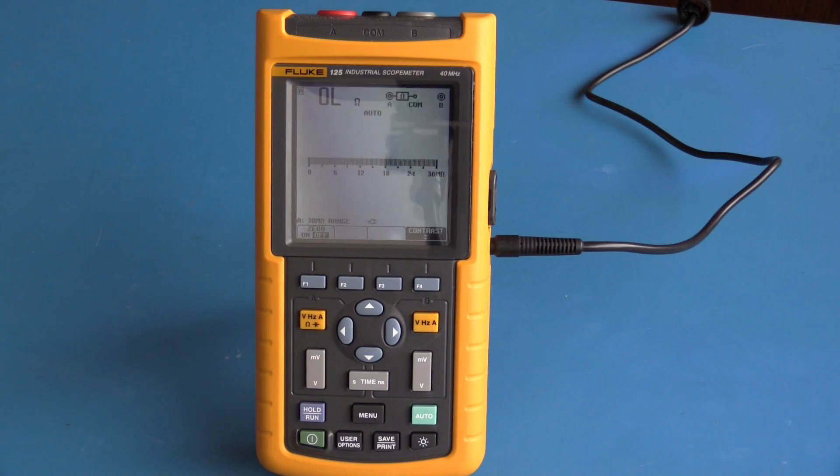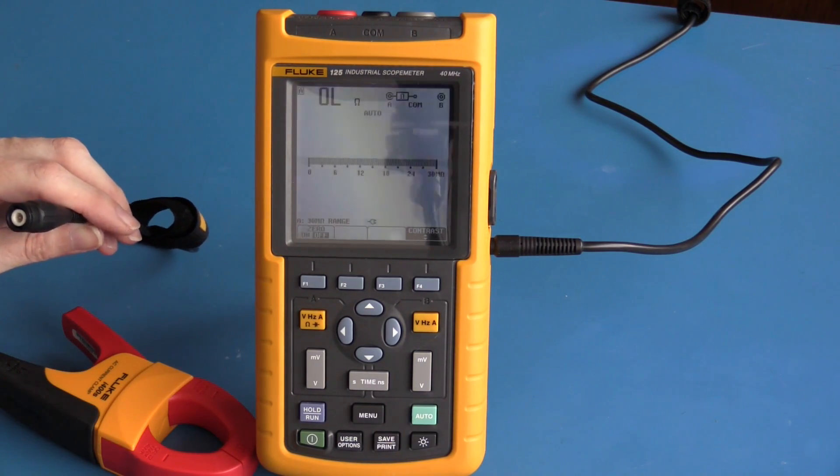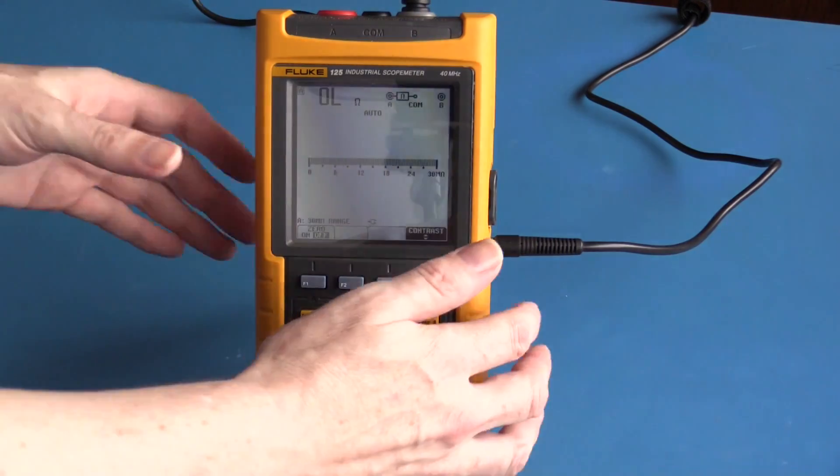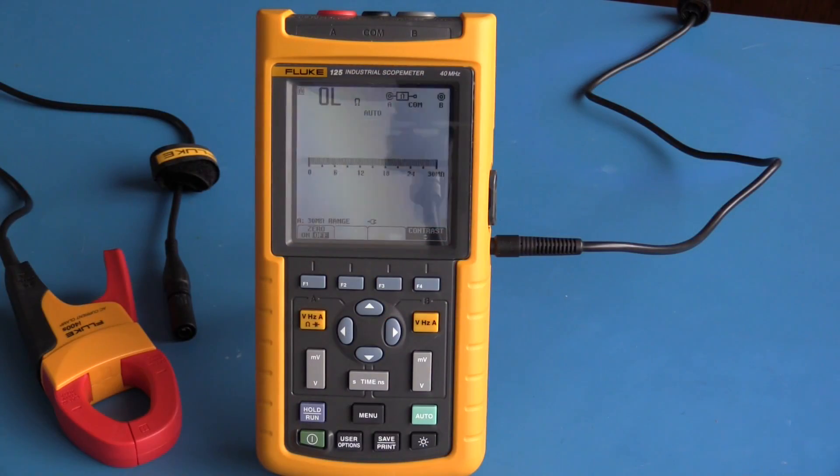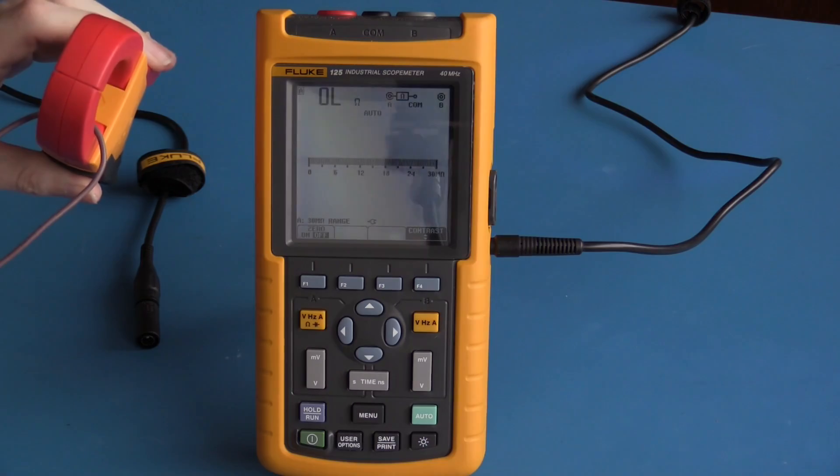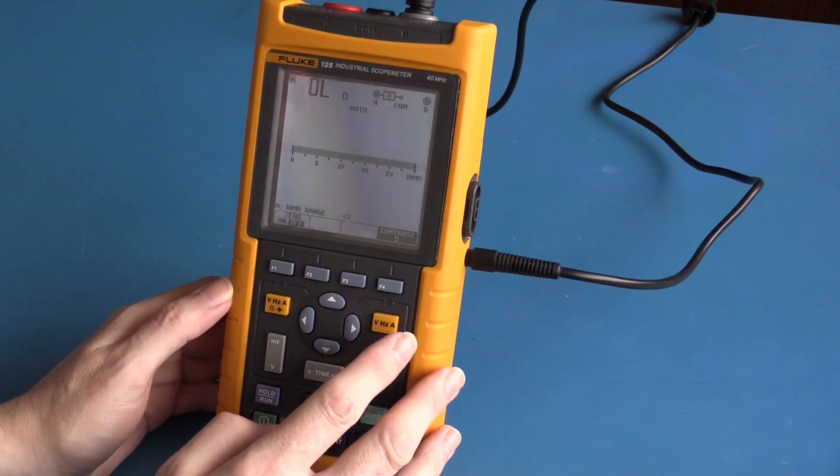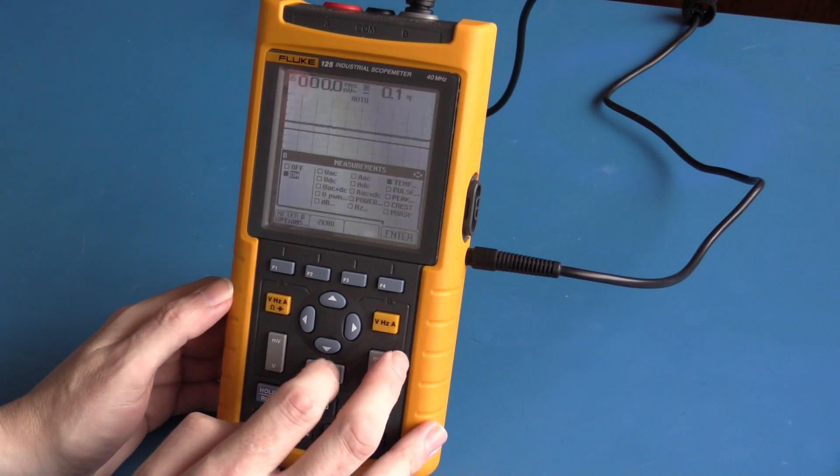To measure current you will require a current clamp. The current clamp I'm using has a BNC plug and I have this adapter which allows me to use it with this meter. To use a current clamp, the current clamp is clamped around the live conductor. I need to first turn on input B.